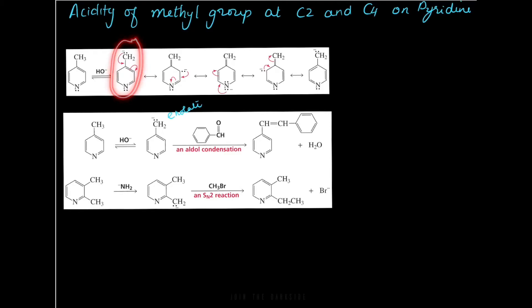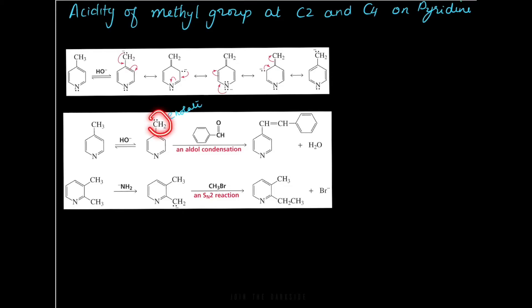What reactions can this carbanion undergo? You can think of it as more like an enolate ion. Once the base abstracts the hydrogen, it forms an enolate-like structure, and this carbanion goes on to attack a carbonyl compound, giving the addition product. Remember, the product for an aldol addition reaction is going to be a beta-hydroxy aldehyde or ketone, depending upon the starting materials.